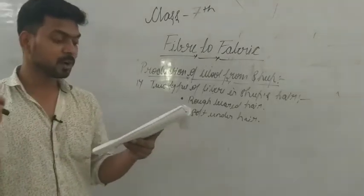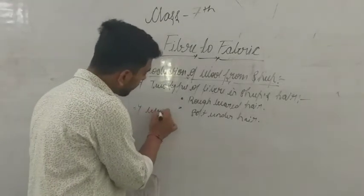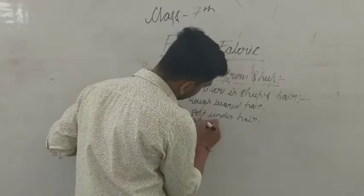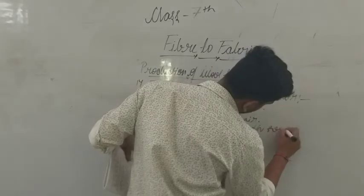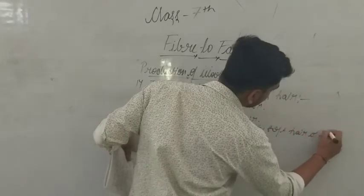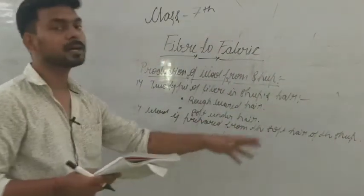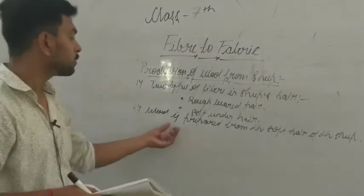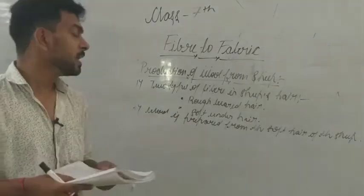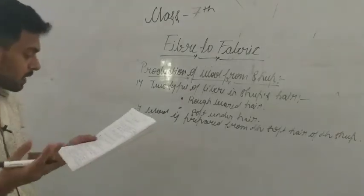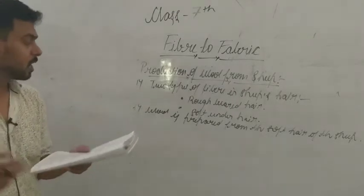Wool is made from the soft hair of the sheep because of its fine quality. The soft under hair is very fine and its texture is very good, which is why we use it for wool preparation.